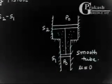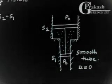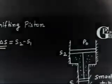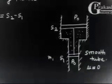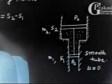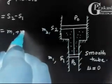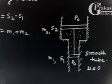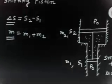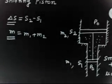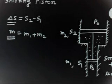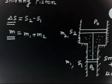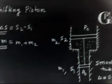Now the question says the combined mass of the two pistons is equal to M. So piston 1 has mass M1, piston 2 has mass M2, and the combined mass is given: M equals M1 plus M2. The question asks: how many Kelvin should the temperature of the gas between the pistons be raised so that the pistons shift up by distance L?